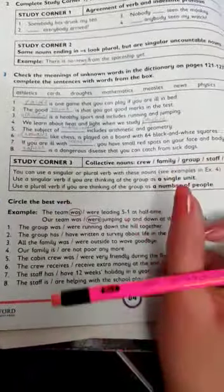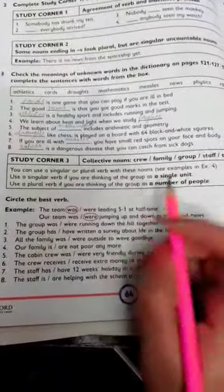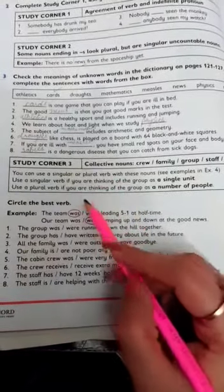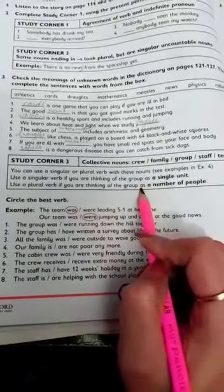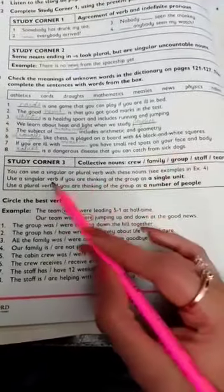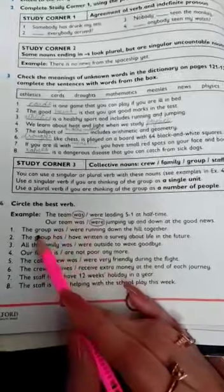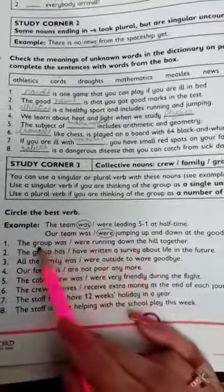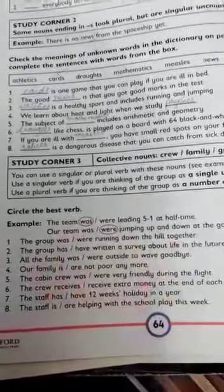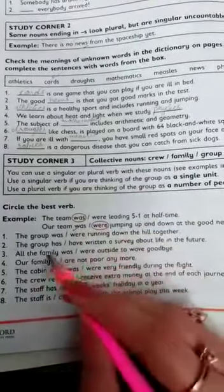If we are thinking about the group or the noun as plural, with more people, then we will choose the plural verb. Let's start with the first one: the group was running down the hill together. The group blank have written a survey about life in the future. Here the group is one unit, so 'has' is the correct answer.